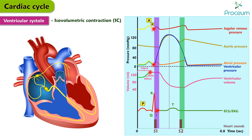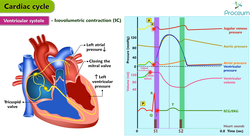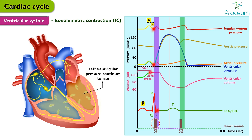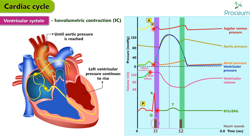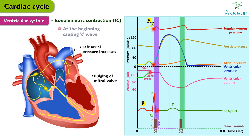During the initial part of isovolumetric contraction, the left ventricular pressure rises above the left atrial pressure, closing the mitral valve. Mitral valve closure, which occurs slightly before the tricuspid valve, marks the beginning of isovolumetric contraction. Closure of atrioventricular valves produces the first heart sound, S1 — the loudest and longest heard sound, continuing into early ejection. Left ventricular pressure continues to rise at an increasingly rapid rate until aortic pressure is reached. The left atrial pressure increases transiently due to the bulging of the mitral valve into the left atrium at the beginning of isovolumetric contraction, causing the C-wave.